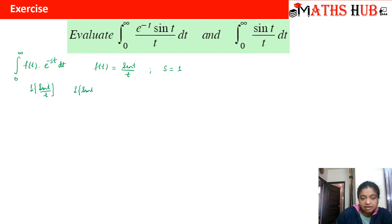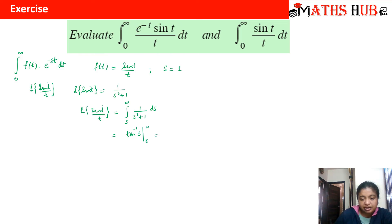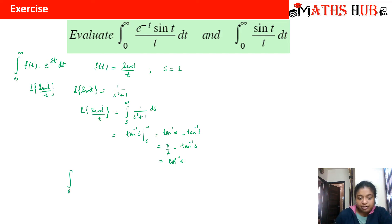We start with L{sin(t)} = 1/(s²+1). Using the division-by-t property, L{sin(t)/t} = integral from s to infinity of 1/(s²+1) ds = [tan⁻¹(s)] from s to infinity = π/2 − tan⁻¹(s) = cot⁻¹(s). Evaluating at s = 1 gives cot⁻¹(1) = π/4.